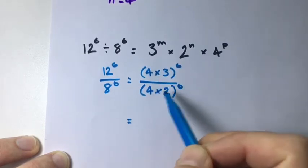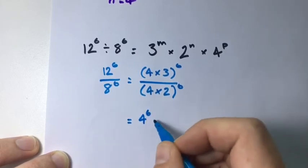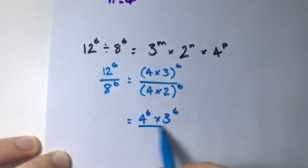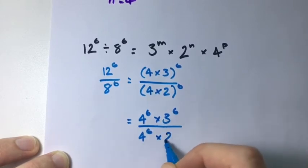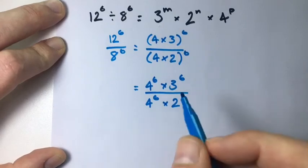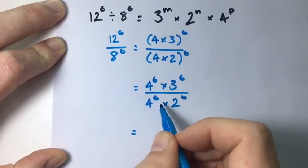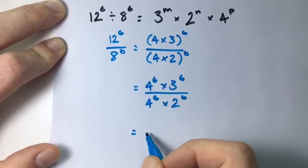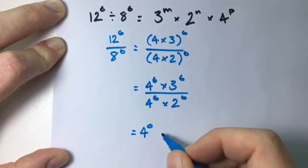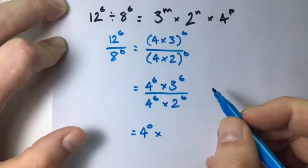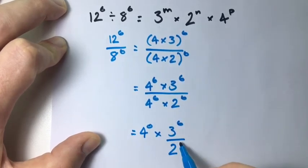Now, let's distribute my 6's here. So we have 4 to the power of 6 times 3 to the power of 6 over 4 to the power of 6 times 2 to the power of 6. So let's write these out. 4 to the power of 6 over 4 to the power of 6 is the same as 4 to the power of 0, 6 minus 6 is 0, times 3 to the power of 6 over 2 to the power of 6.